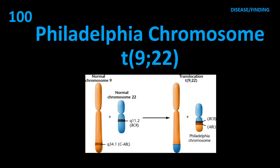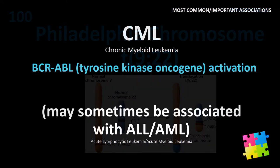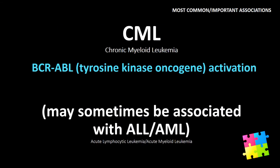Item 100: Philadelphia chromosome t(9;22) — CML, with BCR-ABL tyrosine kinase oncogene activation. May sometimes be associated with ALL or AML.